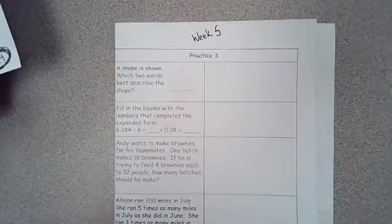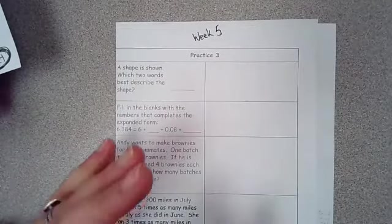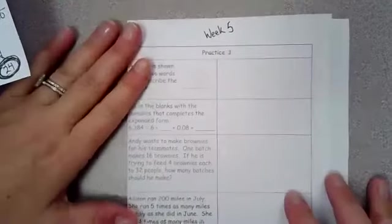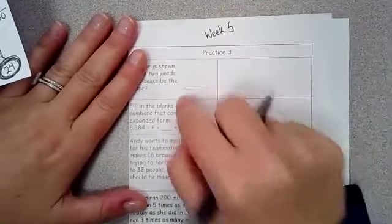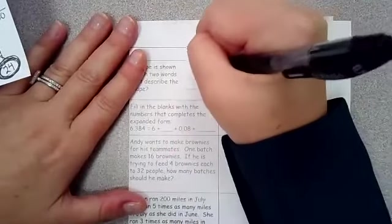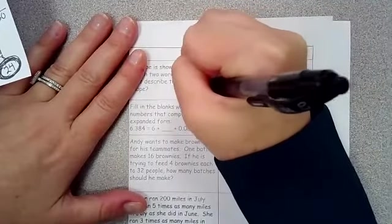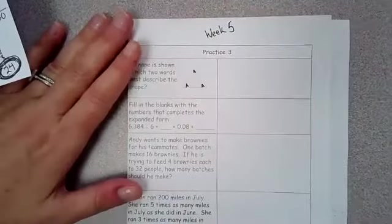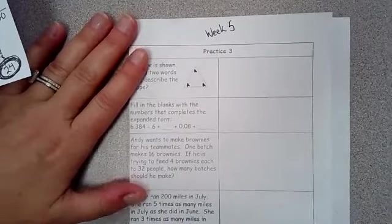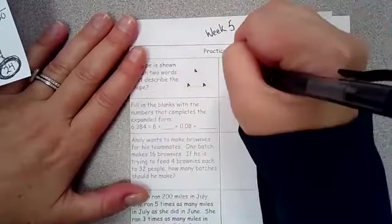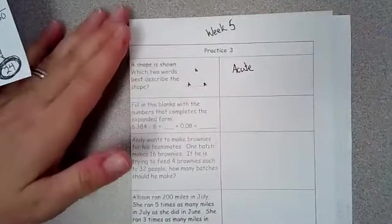So a shape is shown. What two words best describe the shape? So as I said before, triangles are described by their angles and by their sides. Okay, so let's label the angles. Are they acute, obtuse, or right? Okay, so this angle is acute, this angle is acute, this angle is acute. Acute means that the angle is less than 90 degrees, so it's a small angle. And since all three angles are acute, this is an acute triangle. Okay, so that's its angle name.